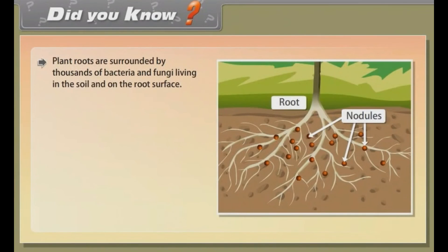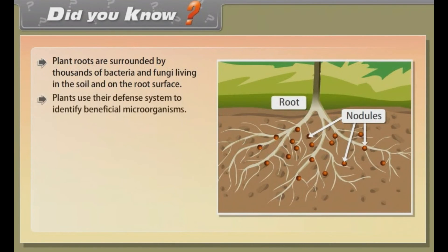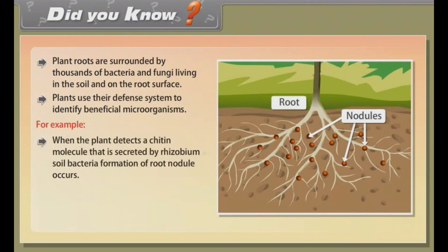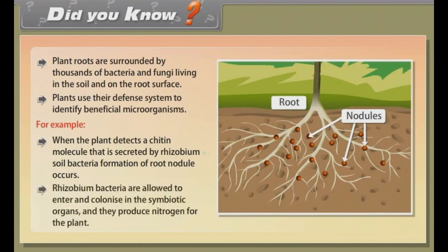Did you know? Plant roots are surrounded by thousands of bacteria and fungi living in the soil and on the root surface. Plants use their defense system to identify beneficial microorganisms. For example, when a plant detects a chitin molecule secreted by Rhizobium soil bacteria, formation of root nodules occurs, and Rhizobium bacteria are allowed to enter and colonize the symbiotic organs, producing nitrogen for the plant.